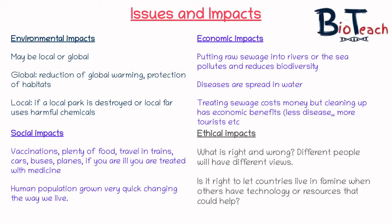In terms of the implications and impacts, you have to mention these four: environmental, economic, social and ethical impacts. Environmental could be local or global, and it could be positive or negative — that applies to all four. An example of a global environmental impact would be the reduction of global warming helping to protect habitats.